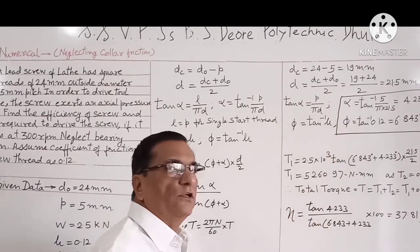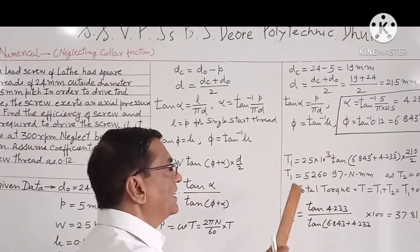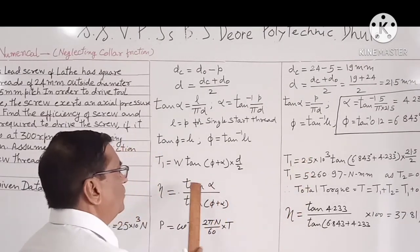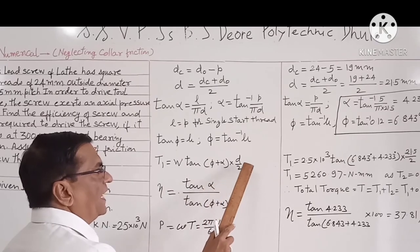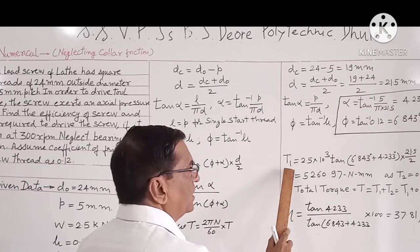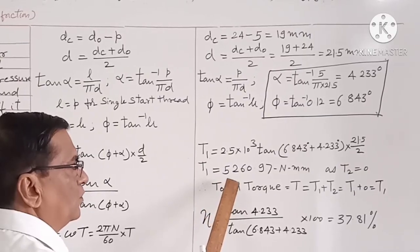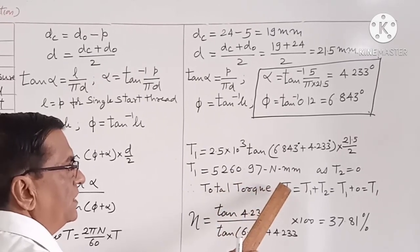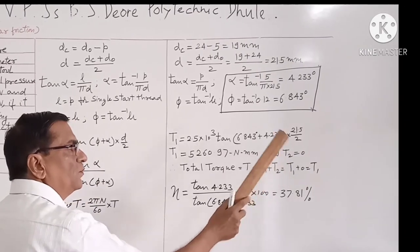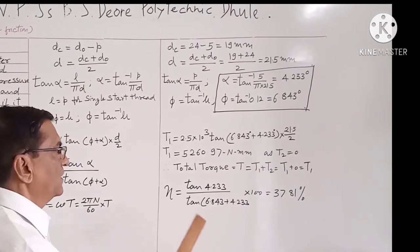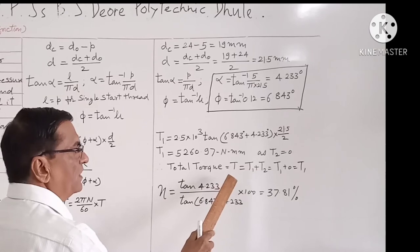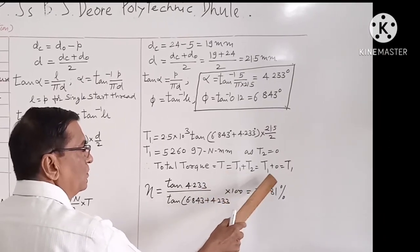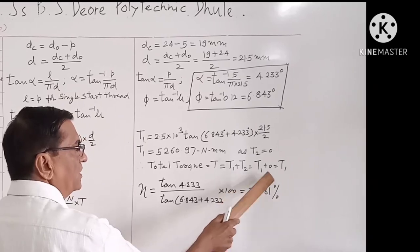After finding the value of alpha and phi, we will calculate the torque from this formula. Putting the value of W, phi, alpha and D, the torque T1 comes out to be 5,260.97 Newton millimeter. As T2 is equal to 0, so total torque will be equal to T is equal to T1 plus T2, will be equal to T1, because T2 is 0.